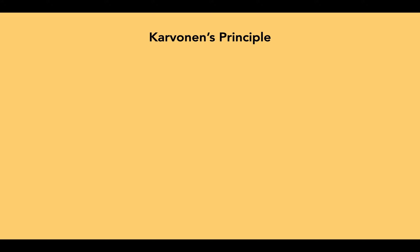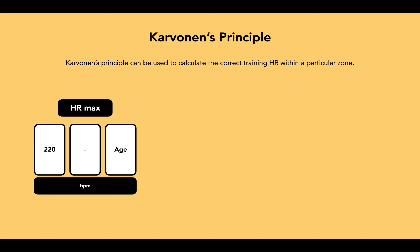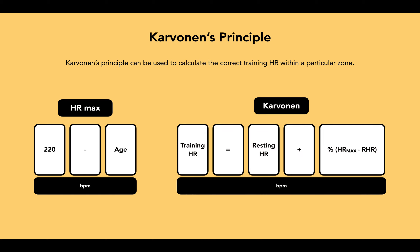Karvonen's principle takes into account a performer's age and resting heart rate. It is used to calculate the correct training heart rate within a particular zone. An individual's heart rate max can be estimated using the formula: 220 minus your age gives your heart rate max in beats per minute. However, Karvonen's principle uses this formula: training heart rate equals resting heart rate plus a percentage of heart rate max minus resting heart rate, measured in beats per minute.